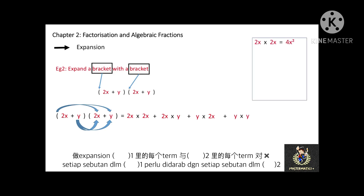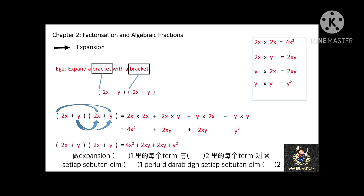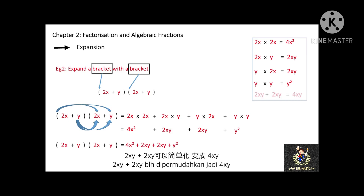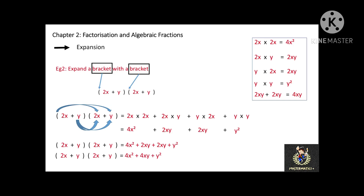2x multiplied with 2x equals 4x squared. 2x multiplied with y equals 2xy. y multiplied with 2x equals 2xy, and y multiplied with y equals y squared. The expansion equals 4x squared plus 2xy plus 2xy plus y squared, which simplifies to 4x squared plus 4xy plus y squared.